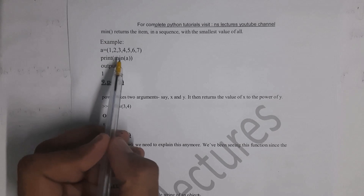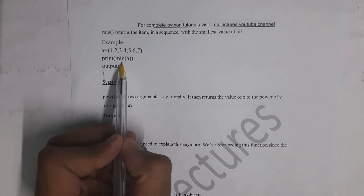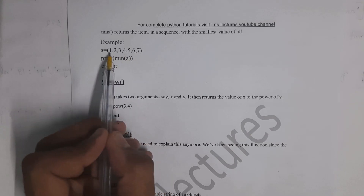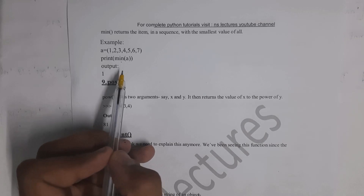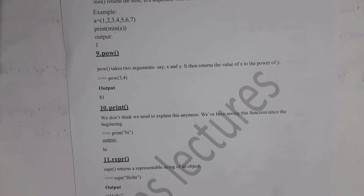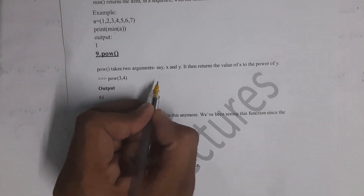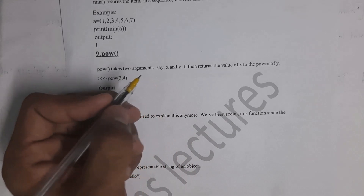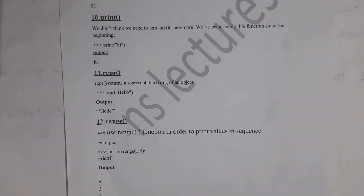Next is the min function: print(min(a)) displays the smallest element. 1 is the smallest, so you get output 1. Next is the pow function: pow(3, 4) calculates 3 to the power of 4, which is 3×3×3×3 = 81. There is no need to discuss the print function separately.